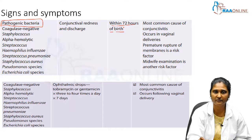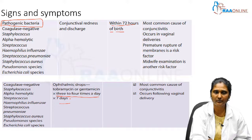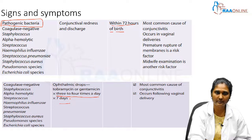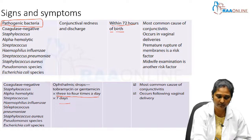Regarding management of non-STD bacterial conjunctivitis, only topical antibiotic drops — either tobramycin or gentamicin — are used, approximately three to four times a day for one week. This most common form of conjunctivitis occurring through vaginal delivery requires only topical antibiotic drops; no parenteral or IV antibiotics are needed.